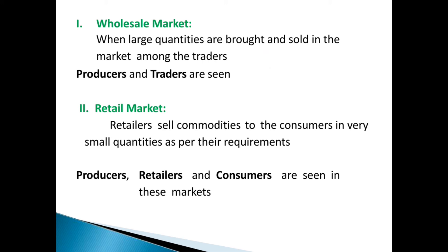The next type is retail market. Retail markets are those where the quantity bought and sold is on a small scale. The dealers are retailers who buy from wholesalers and sell back to the customers. Retailers sell commodities to the consumers in very small quantities as per their requirement, like the shops nearby our home. Producers, retailers, and consumers are seen in this market.